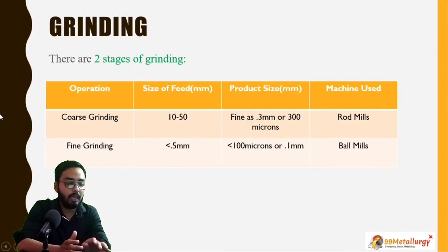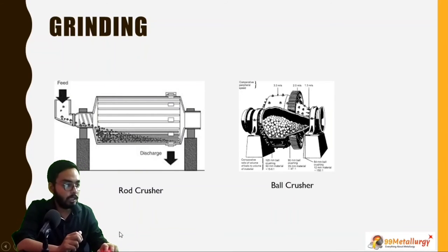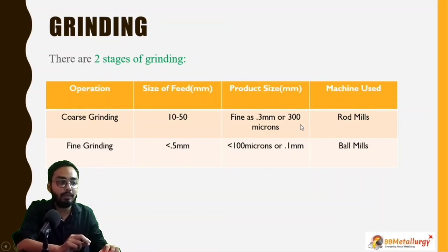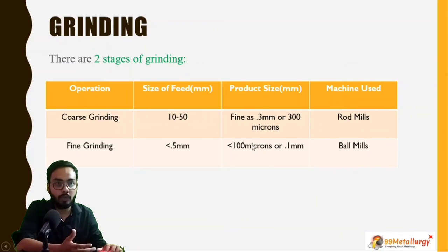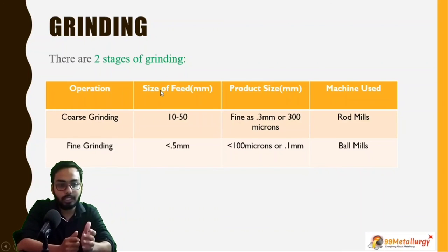For grinding, it is mainly done by rod mill and ball mill — that is coarse grinding and fine grinding. The rod mill looks like this and the ball mill looks like this. If the feed size is around 10 to 50 mm, we reduce it to 300 microns, or 0.3 mm. For further operation, if we want a finer product size, we go for fine grinding using ball mills, where the particle size is less than 0.5 mm, reduced to around 0.1 mm. So here we have learned about crushing and grinding.